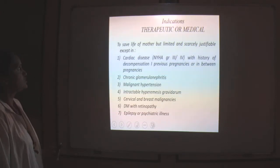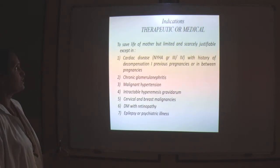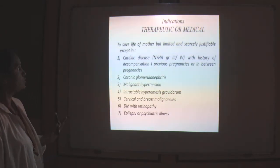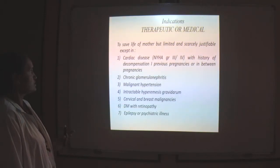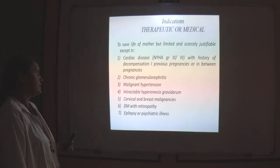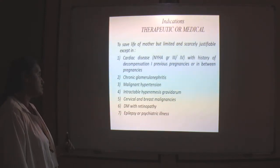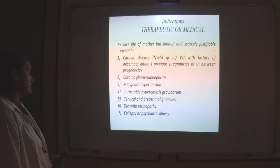What are the indications? There are three types: medical, social, and eugenic. In medical indication, it is to save the life of the mother in cases such as severe cardiac disease, chronic glomerulonephritis, malignant hypertension, intractable hyperemesis gravidarum, cervical and breast malignancies, diabetes mellitus, epilepsy, or psychiatric illness.